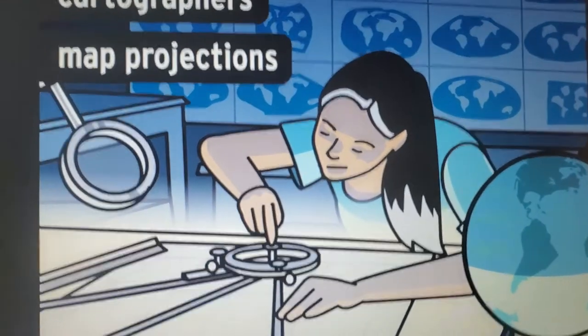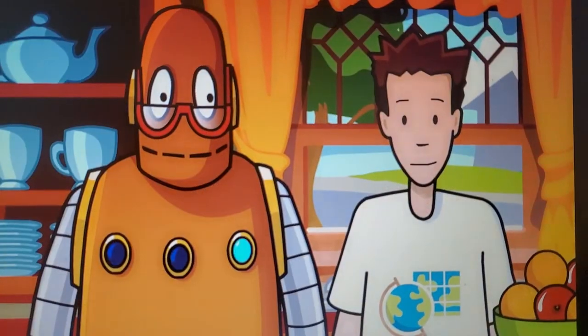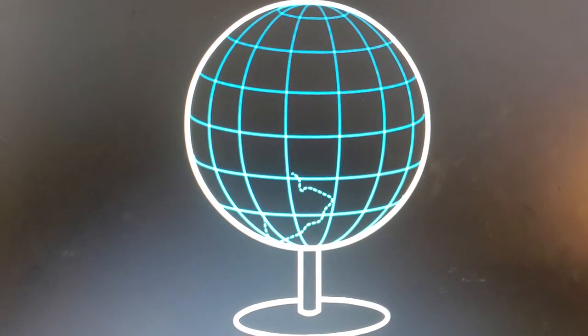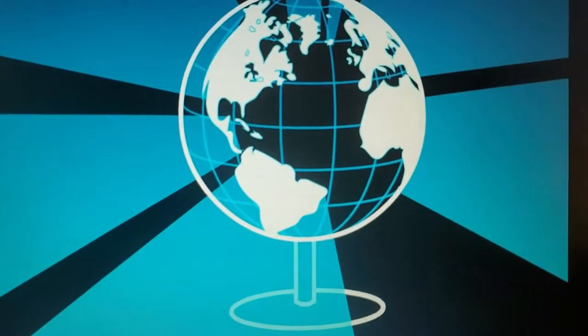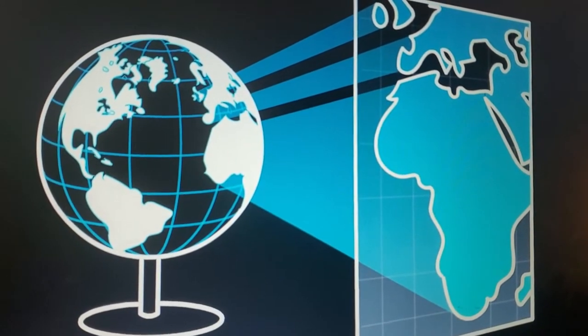They create map projections, transferring locations from Earth onto a flat surface. Well, imagine you had a globe with a light bulb inside, and all the continents cut out. If you put a big piece of paper next to it, the light would project the land masses onto it.